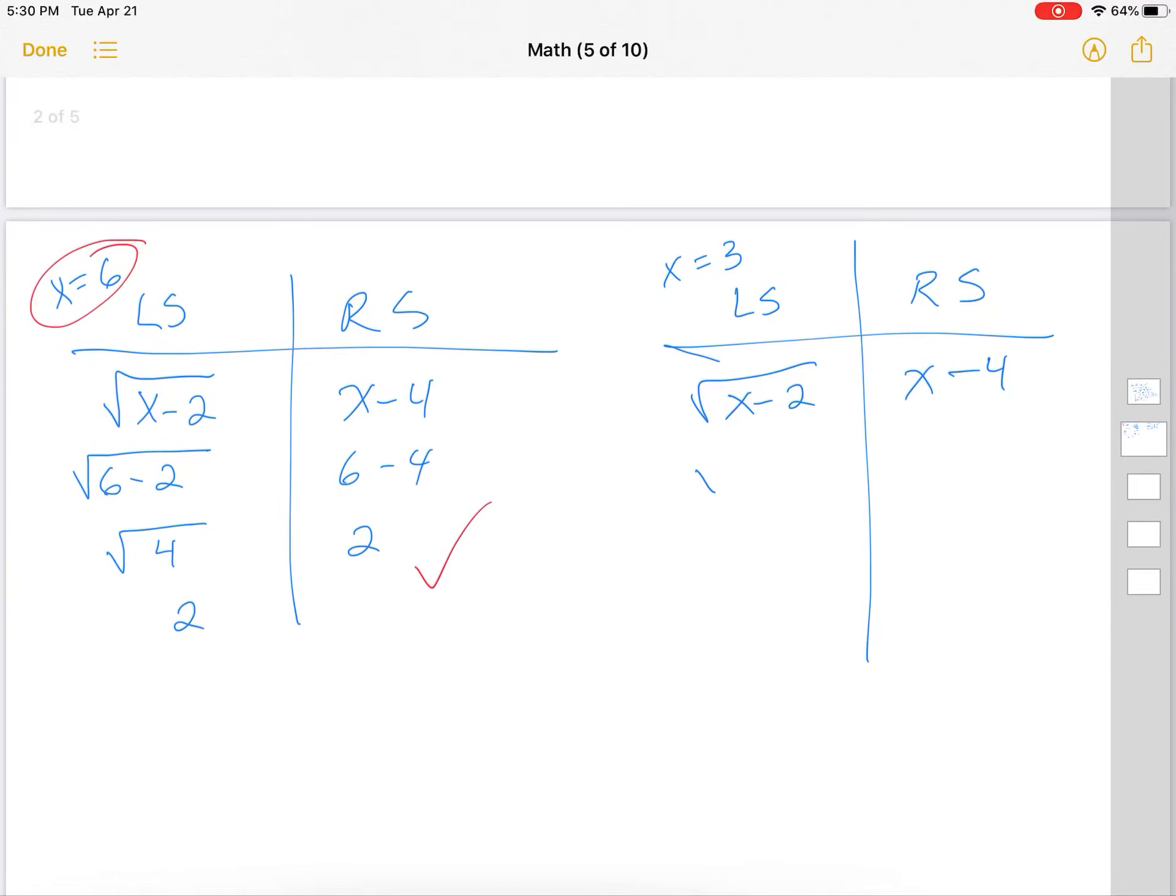Let's try the other side. So we're testing x equals 3. So I get 3 minus 2, and here I get 3 minus 4. So 3 minus 2 is 1, square root of 1. 3 minus 4 is negative 1. Square root of 1 is 1. So this does not work.